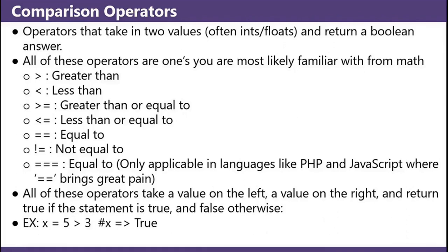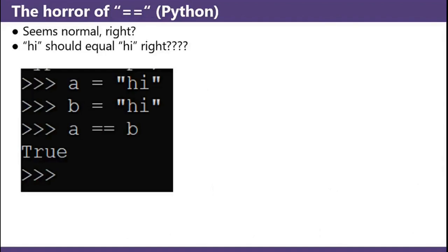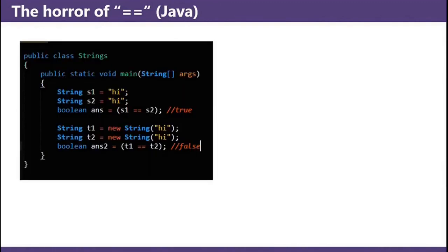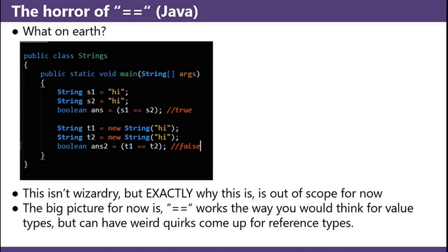An example: x equals 5 greater than 3. Five is greater than 3, so now x equals true. The horror of double equals — this is a Python example. High should equal high, right? But you have two strings, you compare 'hi' — it's true. You have two strings, you compare 'hi' — it's false. This isn't wizardry, but exactly why this is, is out of scope for now. The big picture: double equals works the way you think it would for value types, but can have weird quirks come up for reference types.